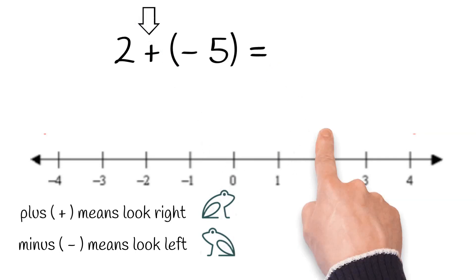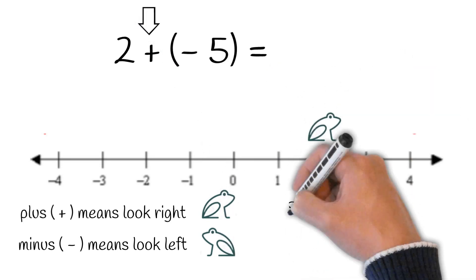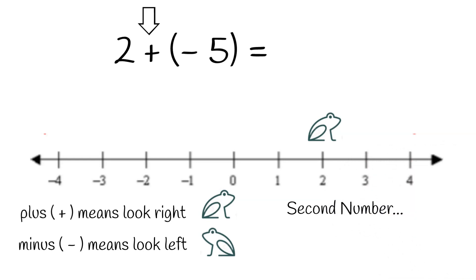The operation, plus or minus, tells us which end of the number line he looks at. Since we're adding, our little frog will look right towards the positive end. Our second number tells us how far to move and which direction to move. We will move forward if it's positive and backward if it's negative.